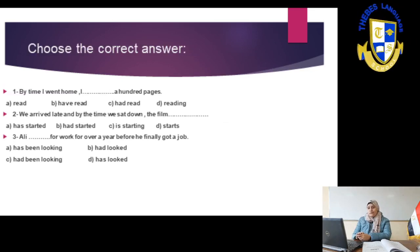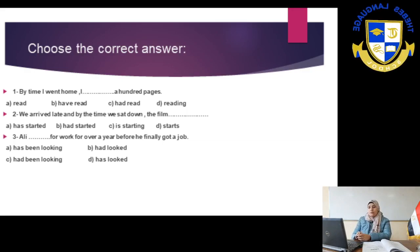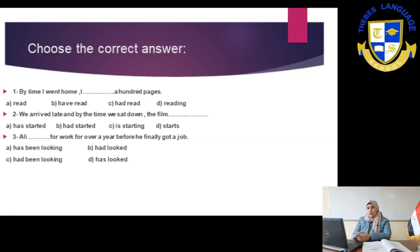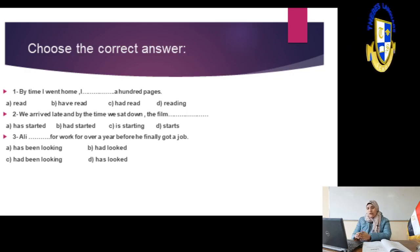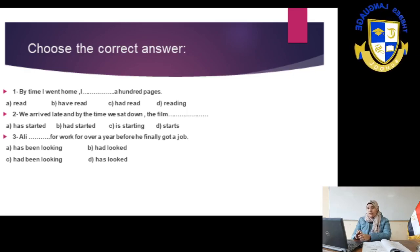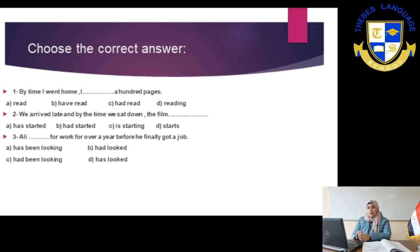Now we will answer some questions — choose the correct answer. Number one: By the time I went home, I had read a hundred pages. 'By the time' is a keyword for the past perfect — usually followed by past simple, then past perfect. Number two: We arrived late, and by the time we sat down, the film had started — two actions, one happened before the other. Number three: Ali had been looking for work for over a year before he finally got a job. The focus is on the duration 'over a year,' so we use past perfect progressive: had been looking.